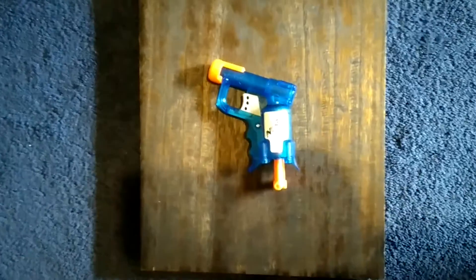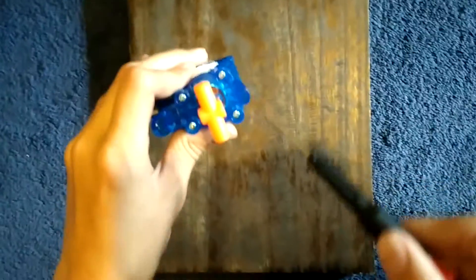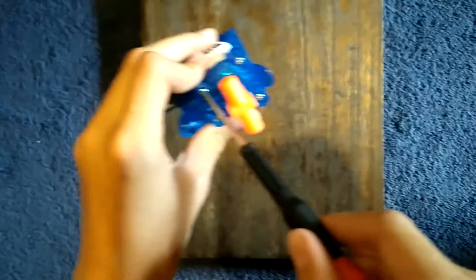So first what you want to do is take your screwdriver, unscrew these four screws on the bottom, and once you get that done you just pull it out like that.